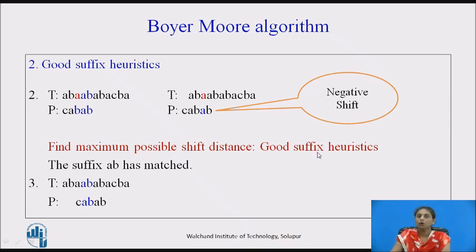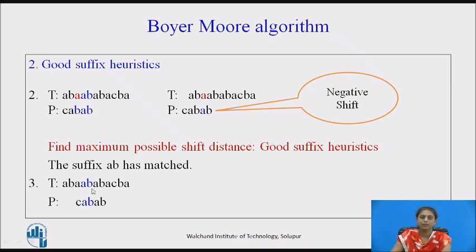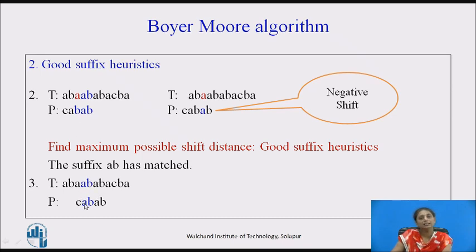Good suffix heuristics refers to how many characters are matched — the matched suffix. In this case, A and B are matched. We check whether those matched characters are present elsewhere in the pattern. Since A, B is also present in the pattern, we align the matched characters to that occurrence in the pattern. So we shift so that the already-matched A, B is aligned to the A, B present earlier in the pattern.